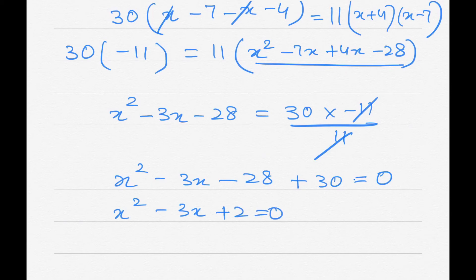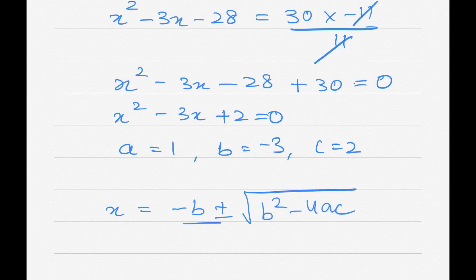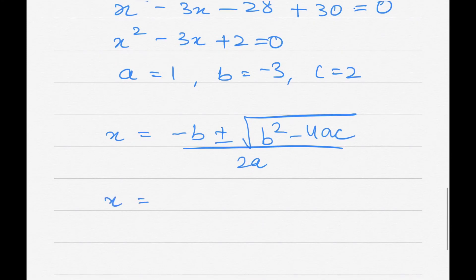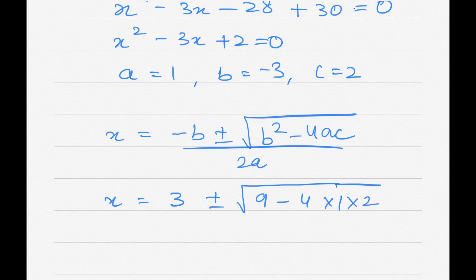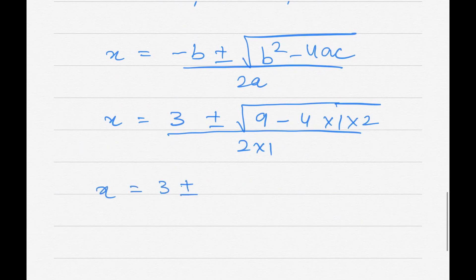This is a quadratic equation. Comparing with ax² + bx + c = 0, we get a = 1, b = -3, and c = 2. Substituting into the quadratic formula: x = (-(-3) ± √((-3)² - 4×1×2)) / (2×1) = (3 ± √(9 - 8)) / 2.